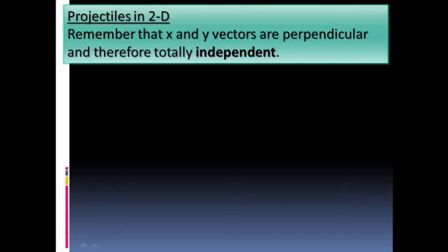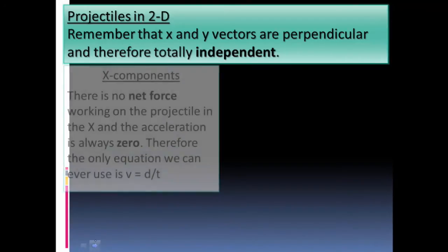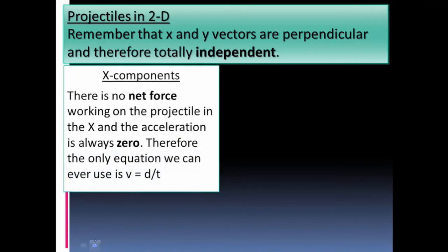If you don't remember trig, go back and review those videos before we get to this. When we're dealing with x components, there is no net force working on the projectile in the x direction, and the acceleration is always zero. That means we can use the uniform motion equation: velocity equals distance over time. In many cases you'll be given the distance or have to find it, and you'll calculate the time of flight using the y vector. Make sure you're clear on that conceptual understanding.